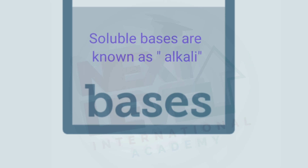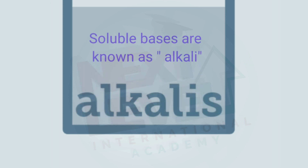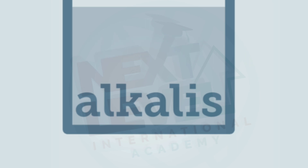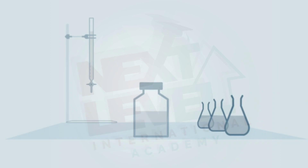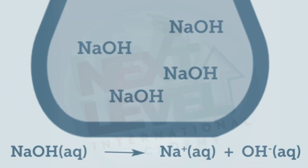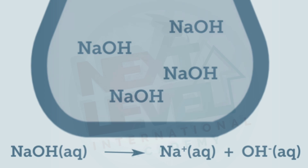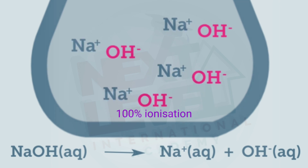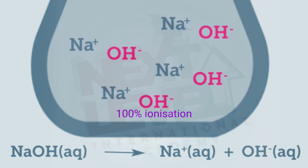By definition, an acid has free hydrogen ions. Bases which are soluble in water are known as alkali — group one metal bases are all soluble in water. In the titration flask we have sodium hydroxide, which is a strong alkali that ionizes completely in water. The (aq) notation stands for any compound soluble in water, so sodium hydroxide dissolves in water and we write it as sodium hydroxide (aq).